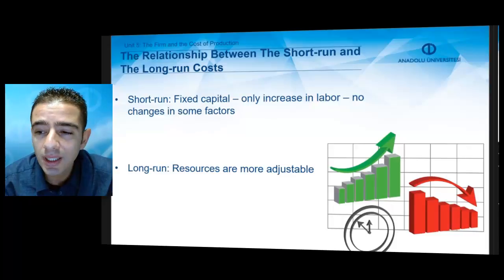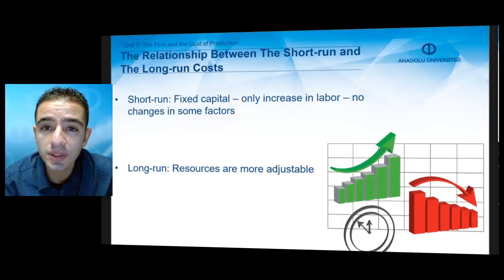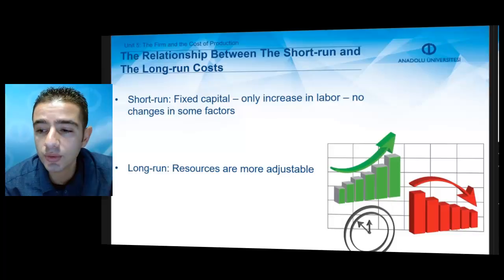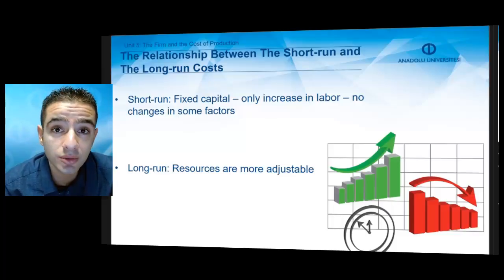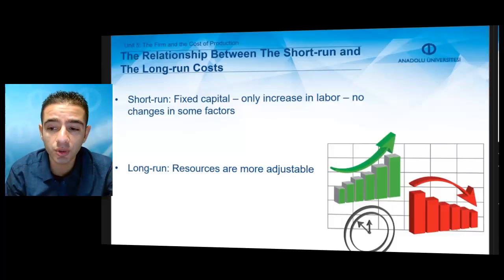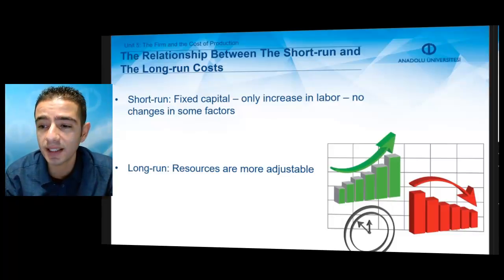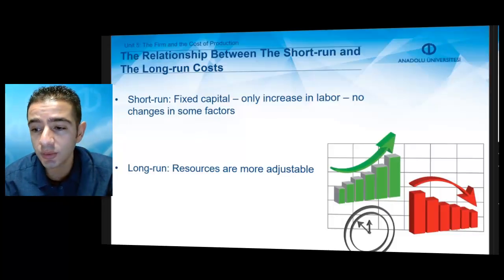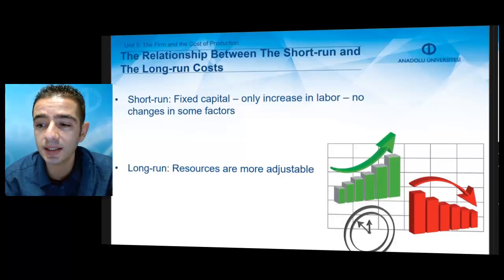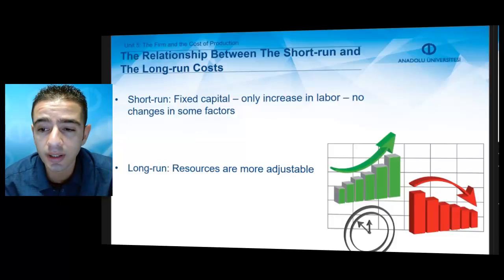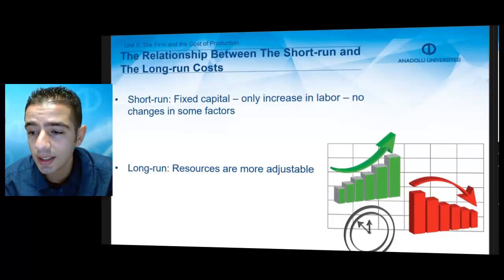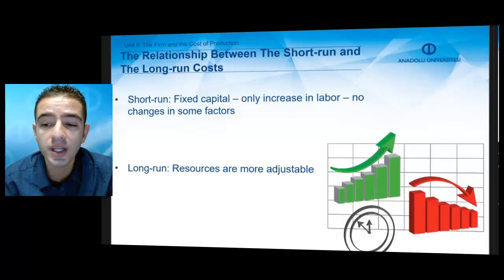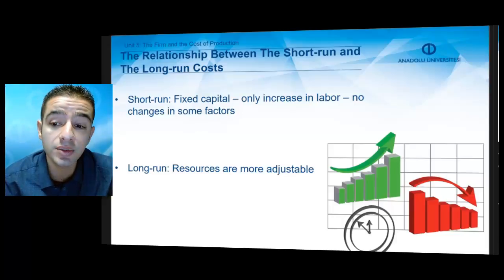While studying the production and cost relationship, economists usually distinguish between short run and long run processes. In the short run, capital is fixed and the firm can only increase labor to increase production, but diminishing returns eventually set in. However, in the long run, the firm can also change the amount of capital it uses.